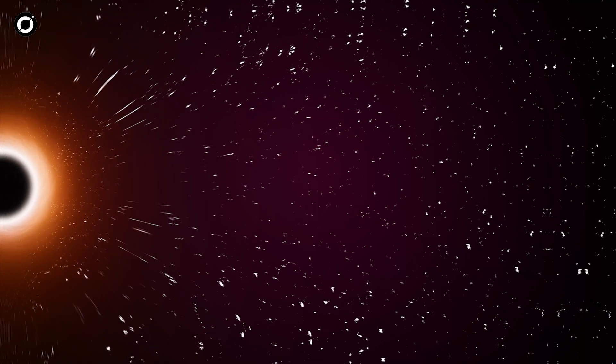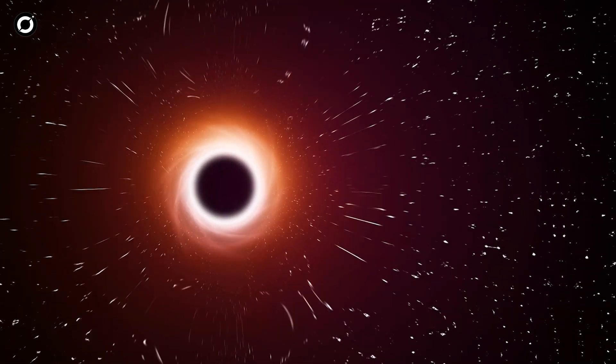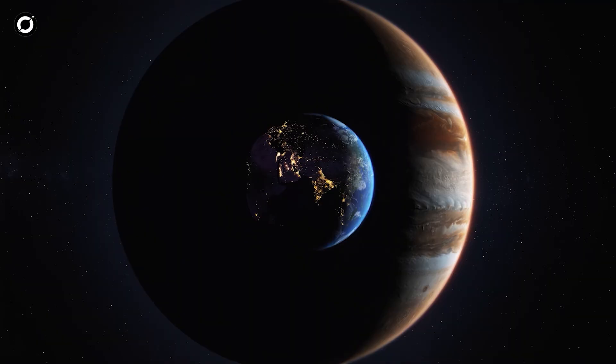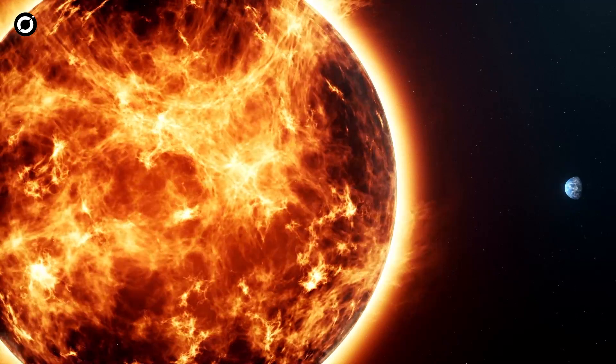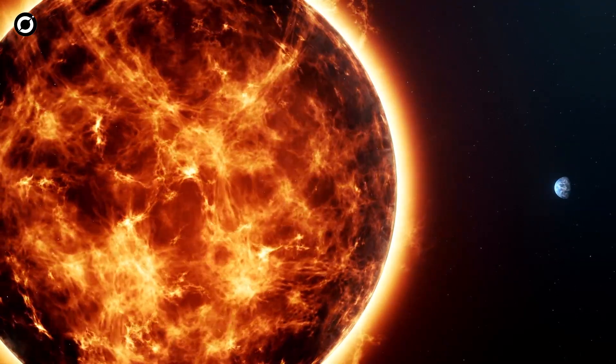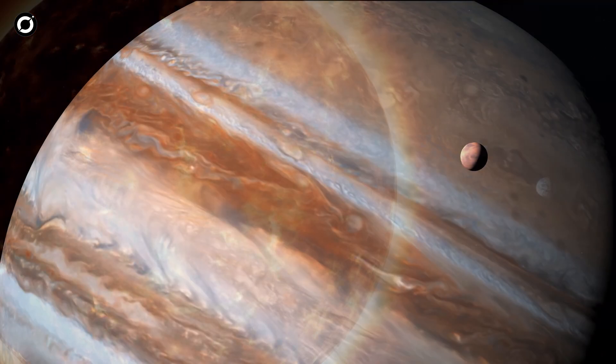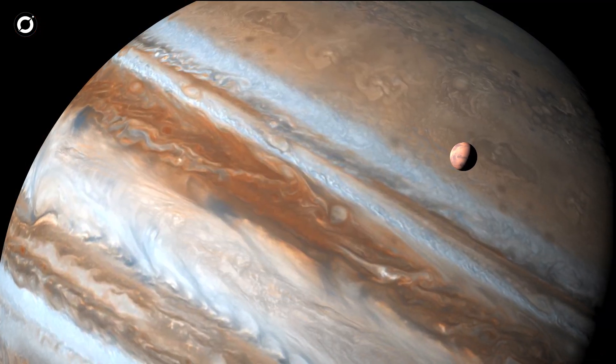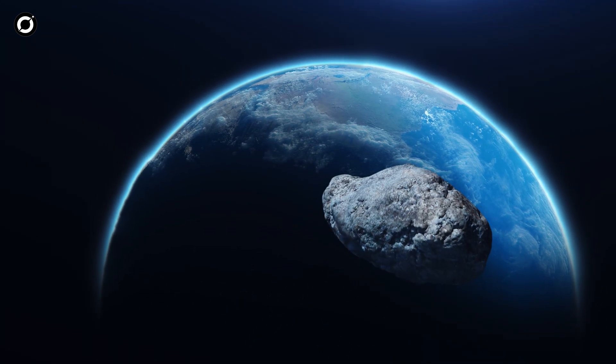As the black hole moves through the solar system, its gravity could destabilize the orbits of the planets, including Earth. The planet's orbit could become unstable, potentially sending Earth on a collision course with the Sun or flinging it out into deep space. The black hole could also disrupt the orbits of other planets and moons, causing chaotic changes in the movement of objects throughout the solar system.